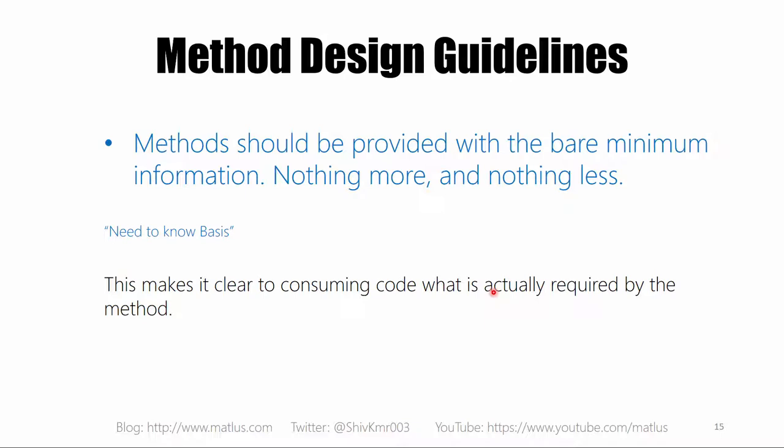Methods should be provided with the bare minimum information — nothing more, nothing less. I call this the need-to-know basis. When you design your method signatures, the formal arguments should be the bare minimum information that method requires to perform the function it claims to do. Nothing less and nothing more — 'nothing more' is the more important one.